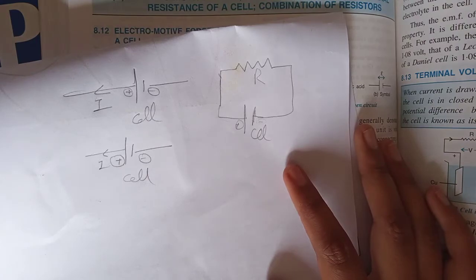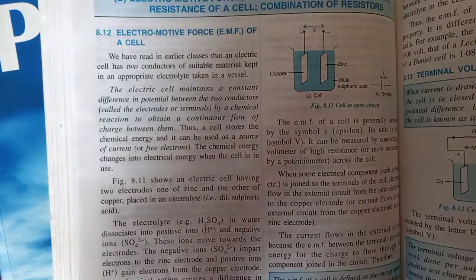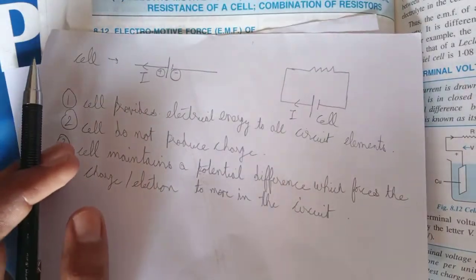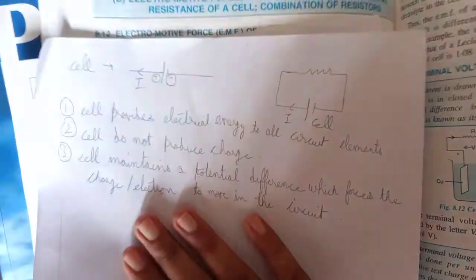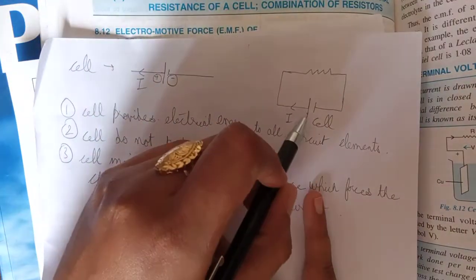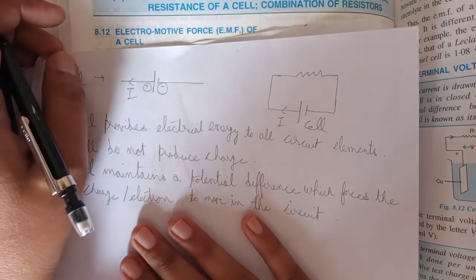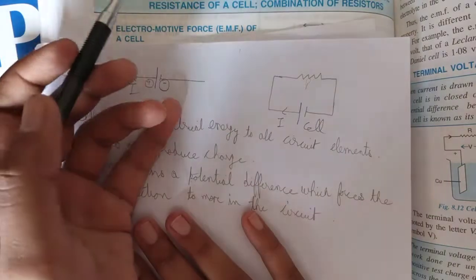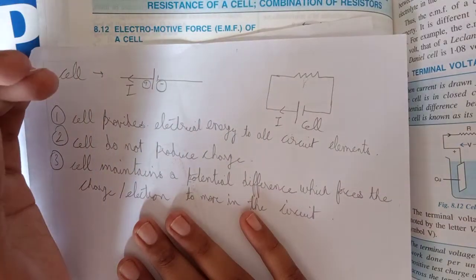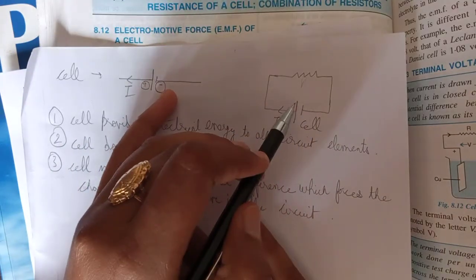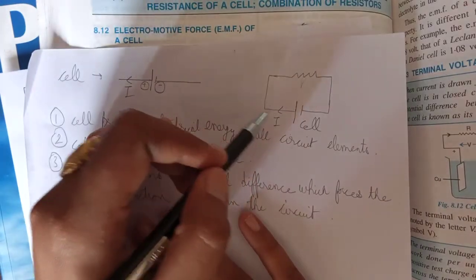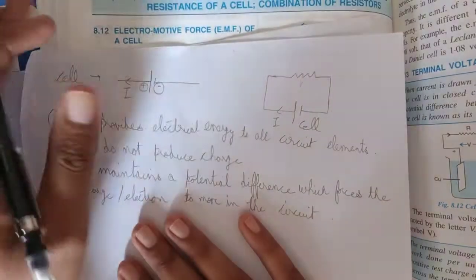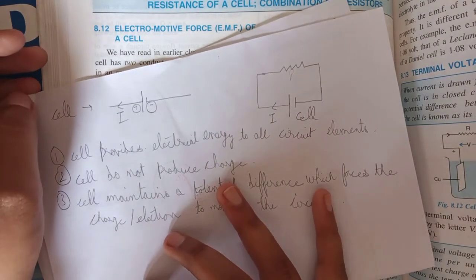The cell provides electrical energy to all the circuit elements. How does it provide electrical energy to all the circuits? We know that in circuits only electrons move. Electrons come from the cell and carry energy through the resistance and all circuit elements — resistors, capacitors, inductors — and deliver electrical energy.